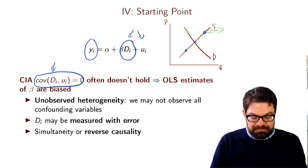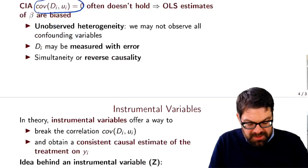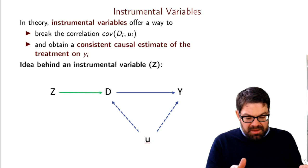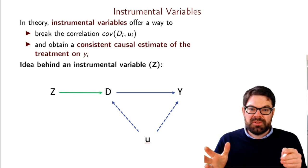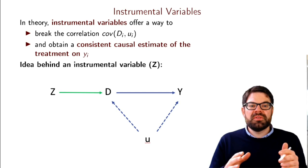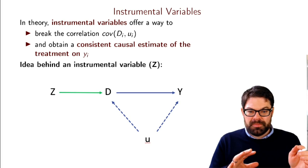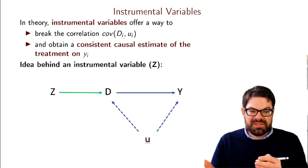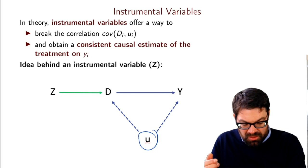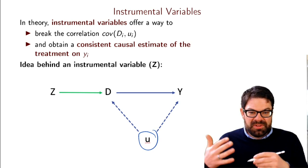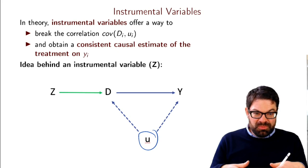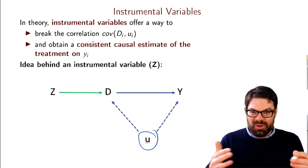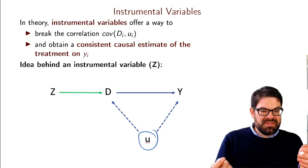So what can we do? This is where IV comes in. IV allows you to break this correlation between the treatment and the error term — this unobserved heterogeneity — and allows you to obtain a consistent causal estimate of the treatment on the outcome. The idea is that we are in this world where we have a confounder U. We know that it most likely simultaneously affects the treatment and the outcome, yet we don't observe it and so we can't adjust for it. In the real world, that's almost always an issue because you can never adjust for all the potential confounders.